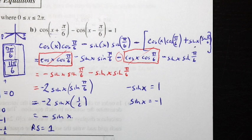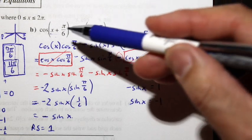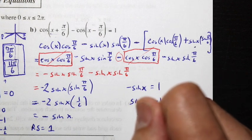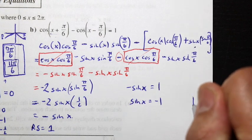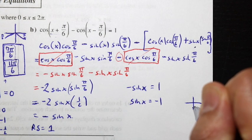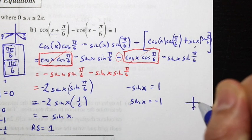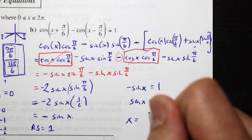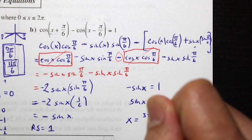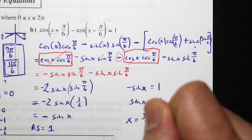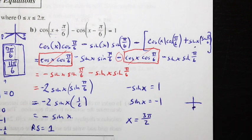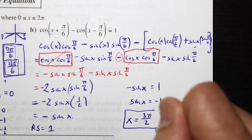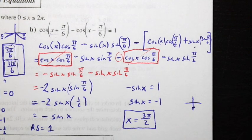Finding the answer in the domain [0, 2π]: sin x = -1 occurs at x = 270° or 3π/2. That is the answer to part B.